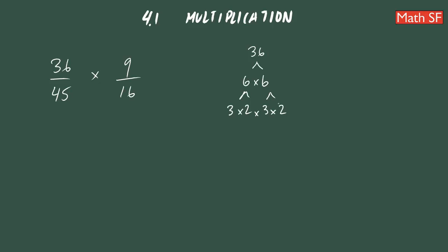So instead of writing 36, we are going to write all of this. So let's rewrite this here. So that will be 3 times 2 times 3 times 2 over 45.